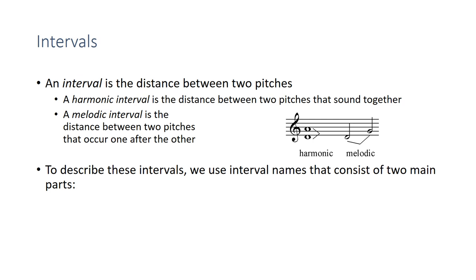The interval names that we use consist of two main parts. First, we need to supply an interval size, like a second or a third. Then we also need to specify an interval quality, like a major interval or a minor interval. You put these two measurements together, and that's the complete interval name.